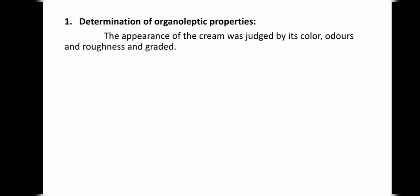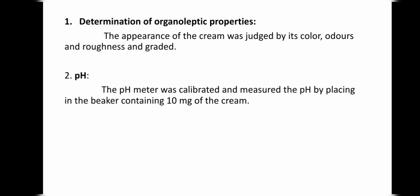The organoleptic property test is a simple process — we can get information by physical or visual appearance after testing the cream, finding out the color, odor, and texture. pH is a very important test in any formulation. For measuring pH, we take 10 mg of cream and use a pH meter to get the reading. Determination of homogeneity means checking how uniform the particles in the cream are in nature.